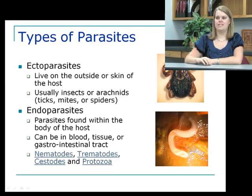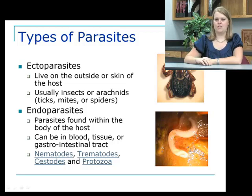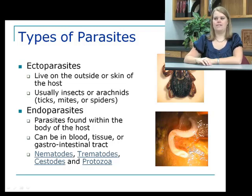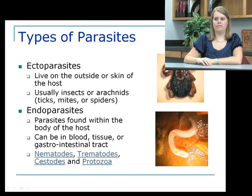The easiest way to talk about parasites is to divide them into ectoparasites and endoparasites. Ectoparasites are those which live outside on the skin of the host — usually insects or arachnids, meaning ticks, mites, or spiders. Endoparasites are parasites found within the body of the host. They can be in blood, in tissue, or in the gastrointestinal tract. These tend to be your nematodes (roundworms), trematodes (flukes), cestodes (flatworms), and protozoa, which are single-celled organisms.